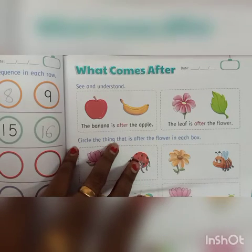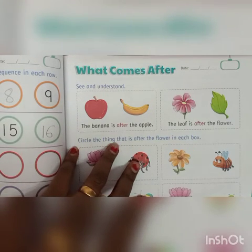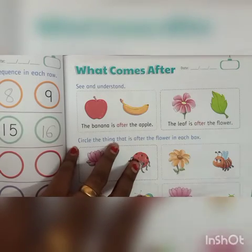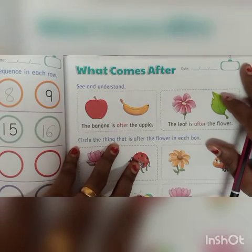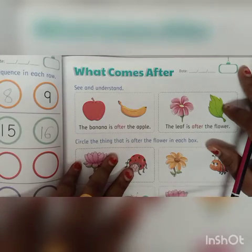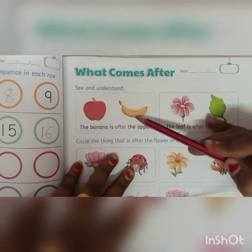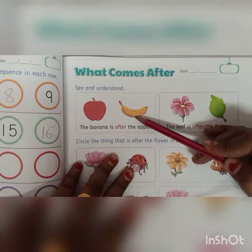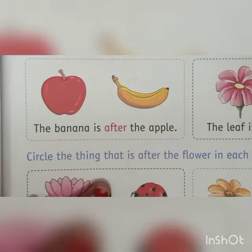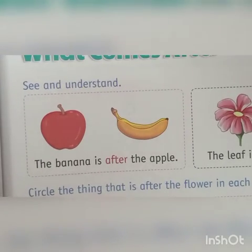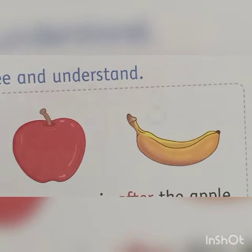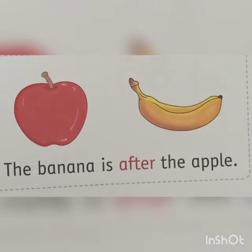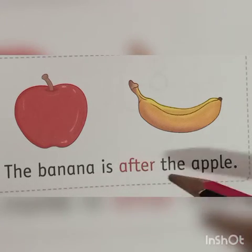What is the concept of what comes after? So just for you all to understand, here there are some pictures given. I will try to explain and you have to understand. Here there is an apple and banana. I will just zoom in for you so that you can see it clearly. You can see there is an apple and banana. The banana is after the apple.